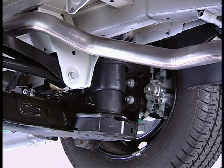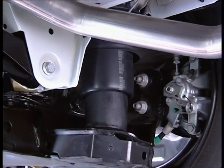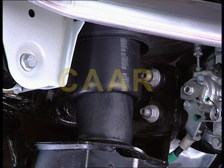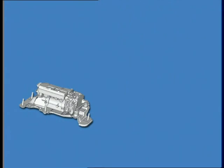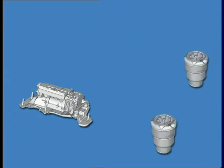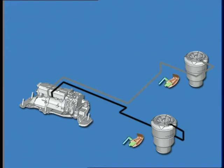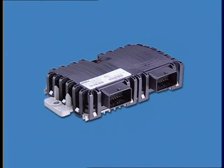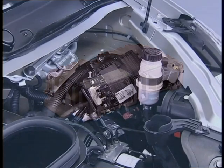The air suspension is also referred to as the CAAR system — rear ride height levelling system. The principal components are a compressor, two pneumatic springs, two body height sensors, and depending on the equipment level, an air reserve. The system is controlled by the CAAR ECU located in the engine compartment.